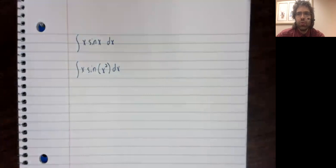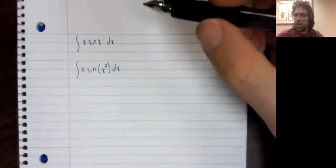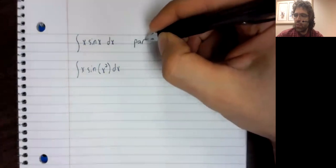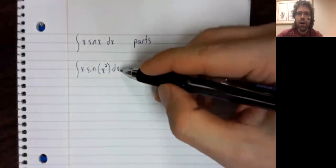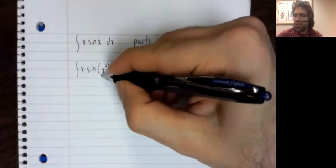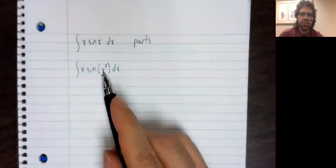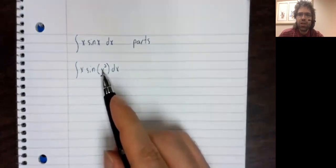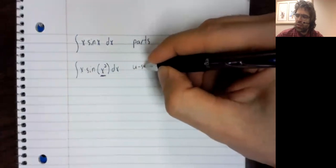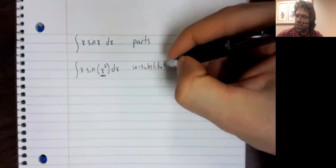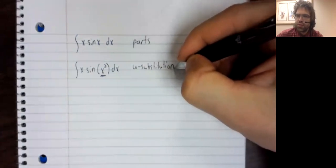These integrals may look similar, but they require entirely different techniques to actually compute them. What we have here is a classic example of integration by parts. What we have here is composition, and the derivative of this inside function minus a constant appears over here. In other words, this is U-substitution.